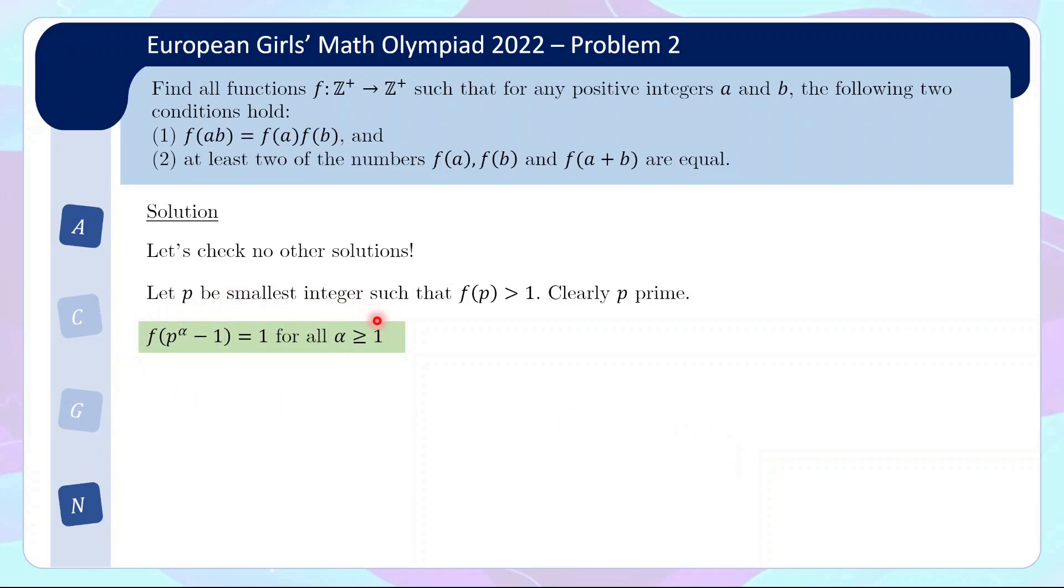So we are actually almost there because once we have this very important piece of information, we can now assume on the contrary that what happens if there's a q, not a multiple of p, but then f(q) bigger than 1. This is what we want to avoid. Once we avoid this, we are done with the question because we are back to the class of solution that we have proven. So not multiple of p here that is bigger than 1.